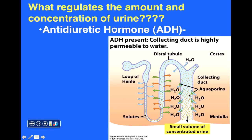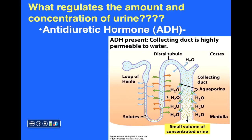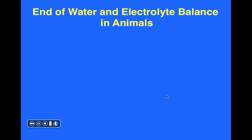Antidiuretic hormone essentially causes the collecting duct to be more permeable to water by triggering production of proteins called aquaporins. Aquaporins are proteins that can be inserted into membranes and cause that structure to be more permeable to water. If the collecting duct becomes more permeable to water, more water exits the filtrate as it passes through the collecting duct, resulting in a smaller volume and higher concentration of urine. ADH is just one factor that regulates the concentration and amount of urine our bodies produce.